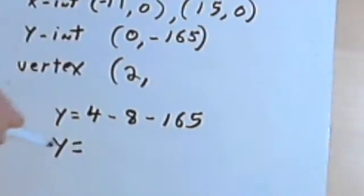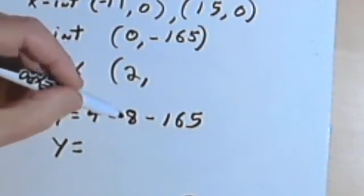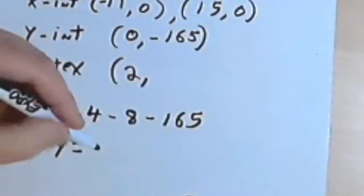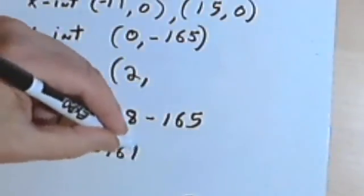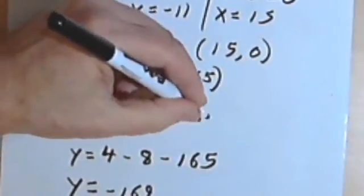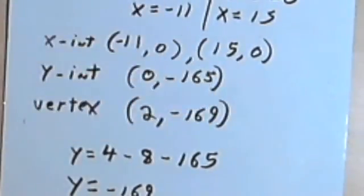And that's going to end up as, let's see, 4 minus 8 is negative 4. Negative 4 minus 165 is negative 169. So negative 169.